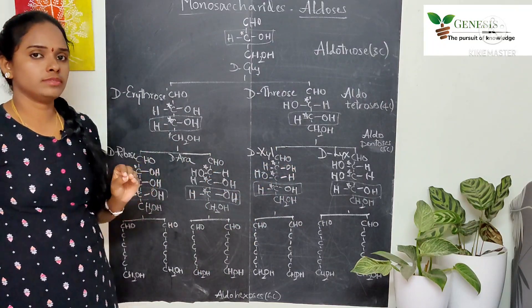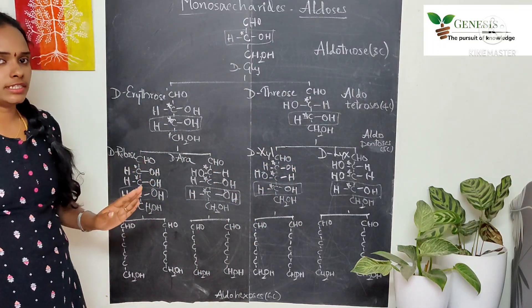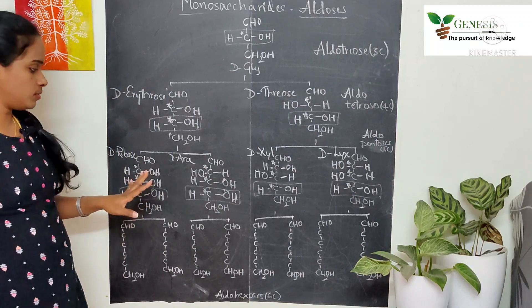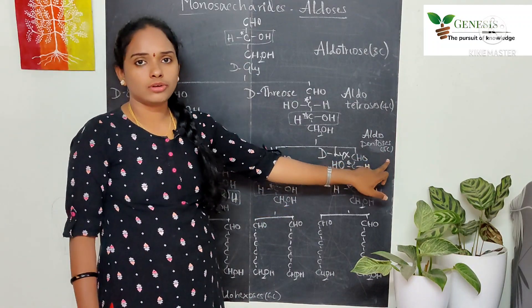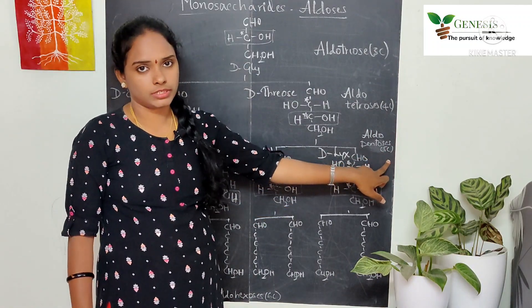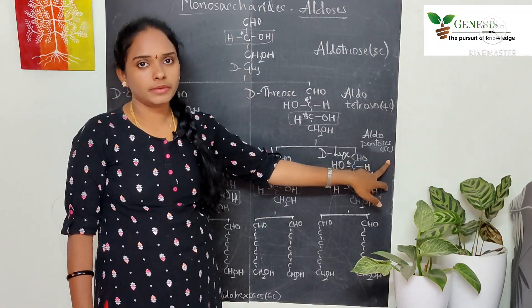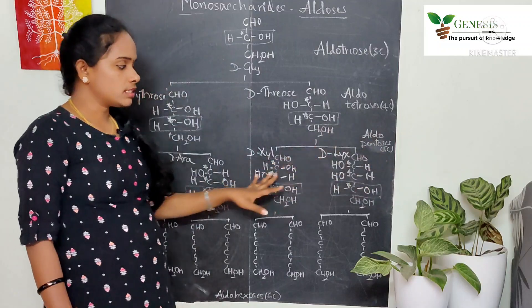The names of these aldopentoses are: D-ribose, D-arabinose, D-xylose, and D-lyxose. These are all D-forms. Since these compounds contain five carbon atoms and an aldehyde as the functional group, they are examples of aldopentoses.